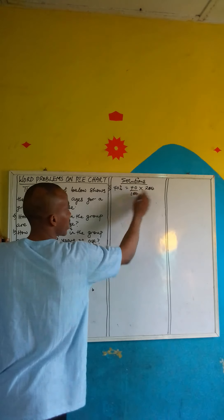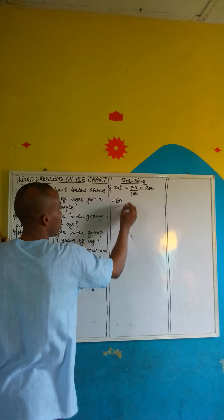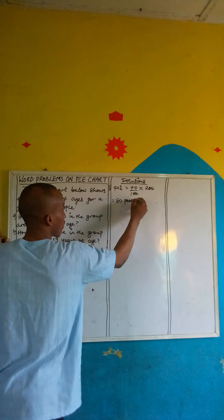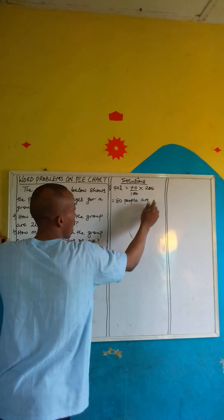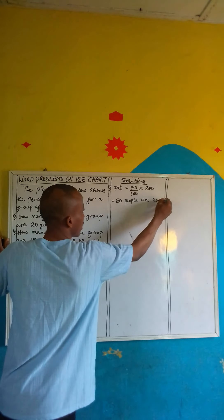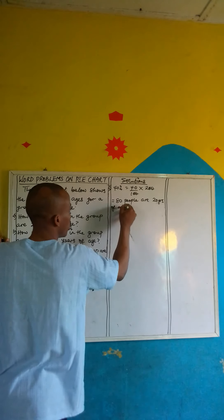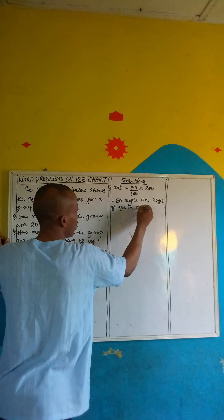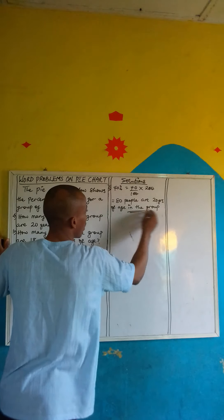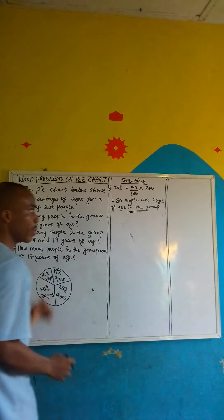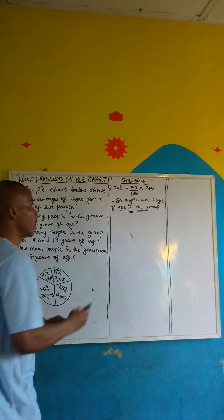The 2-0 cancels 2-0, and 40 times 2 gives us 80. So 80 people are 20 years of age in the group.